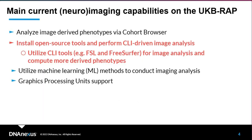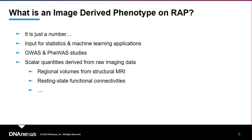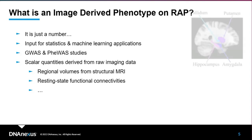One of the main pillars from April was introducing popular neuroimaging tools such as FSL and FreeSurfer on RAP, mostly implementing them via Docker. The main aim was to compute more derived phenotypes. So let's do some intro: what is an image-derived phenotype in general, and what is it on the research analysis platform? Very simply, it's just a number representing a situation.